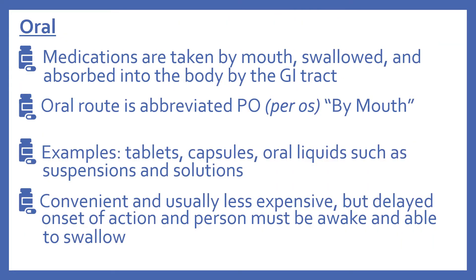First let's look at oral. These are medications taken by mouth, swallowed, and absorbed into the body by the GI tract. The oral route is abbreviated PO, which literally means by mouth in Latin. Some examples include tablets, capsules, and oral liquids such as suspensions and solutions. Oral dosage forms are convenient and usually less expensive, but they have a delayed onset of action and the person must be awake and able to swallow.